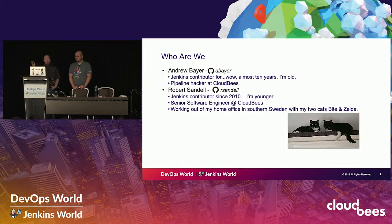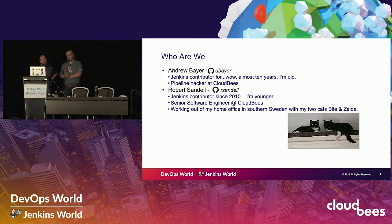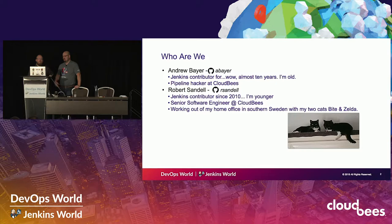So who are we? I'm Andrew. I've been a Jenkins contributor for a decently large portion of my life, almost 10 years now, and I'm a pipeline hacker at CloudBees. I'm Robert Sandell, a.k.a. Bobby. I've been around the Jenkins community since 2010, so I'm a bit younger than Andrew. I'm a software engineer at CloudBees, hacking on various pipeline stuff, working at my home office in Sweden while Andrew is somewhere in Boston. My office mates are my two cats.